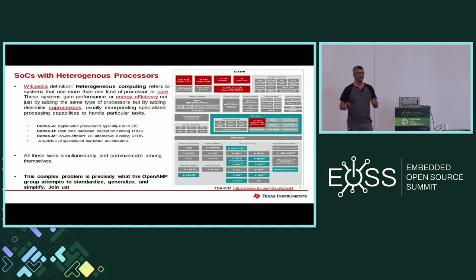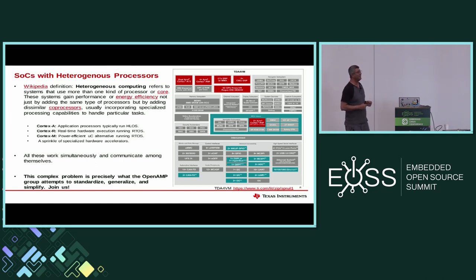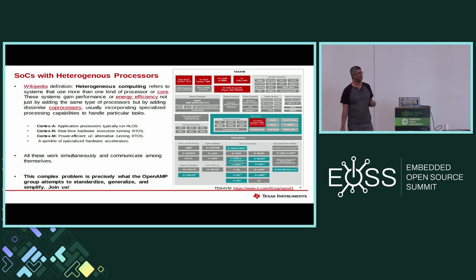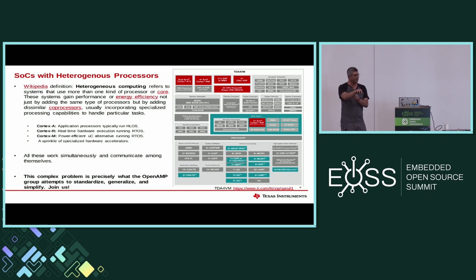I'm yet to see an RTOS developer who doesn't have JTAG on their desk, and yet to see a Linux developer who does. As my Linux colleagues keep telling me, not everybody likes JTAG — but try doing that when your DDR is not working. There are three types of processors on this SoC: Cortex-A, the big application processors; Cortex-R, the real-time microcontrollers that can run as lockstep processors for functional safety; and Cortex-M, the power-efficient microcontrollers handling smaller tasks.